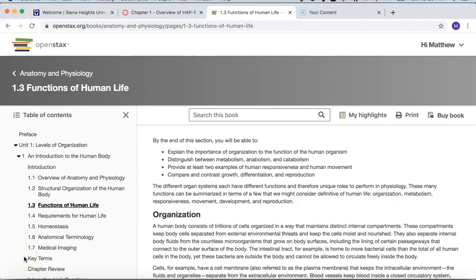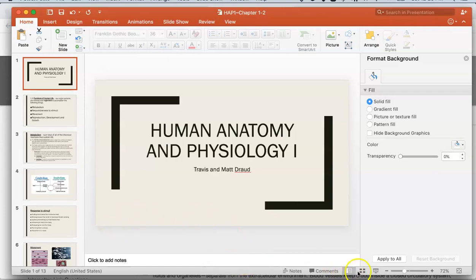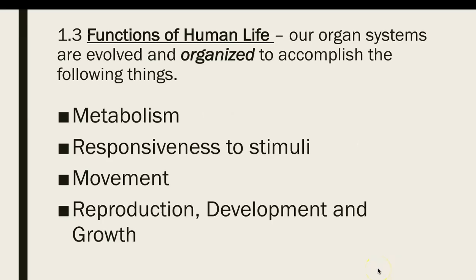Welcome back. This video is going to accompany sections 1.3 and 1.4 in the OpenStax textbook. Beginning with 1.3, this section studies the functions of human life. Our organ systems are evolved and organized to accomplish the following functions, which can be broadly grouped as metabolism, responsiveness to stimuli, movement, and reproduction, development, and growth. We'll take each one in slides and then move on to section 1.4.